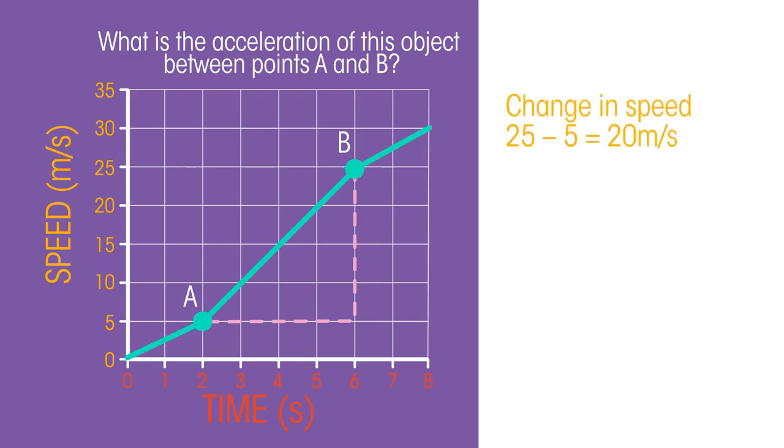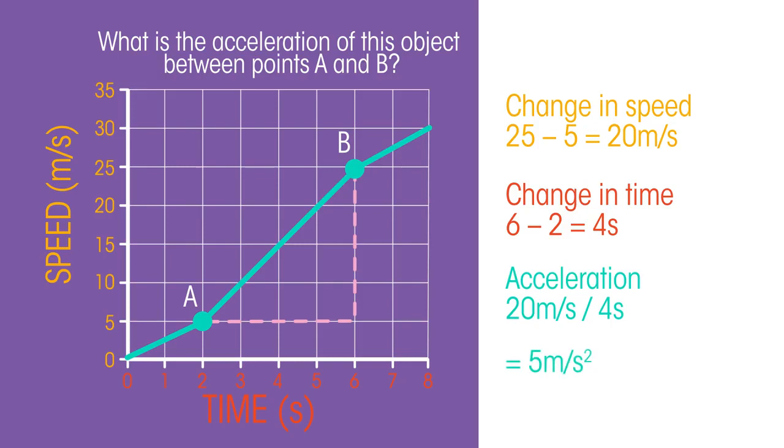The change in speed is 25 minus 5, which equals 20. The change in time is 6 minus 2, which equals 4. So the acceleration is 20 meters per second over 4 seconds, which equals 5 meters per second per second.